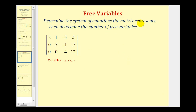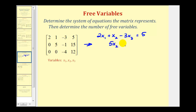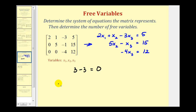Let's take a look at some examples. We want to determine the system of equations the matrix represents and determine the number of free variables. Our variables are x₁, x₂, and x₃. The first equation is 2x₁ + x₂ − 3x₃ = 5. The second row gives 5x₂ − x₃ = 15. The third row gives −4x₃ = 12. We have three variables and three equations, so three minus three gives us zero free variables.